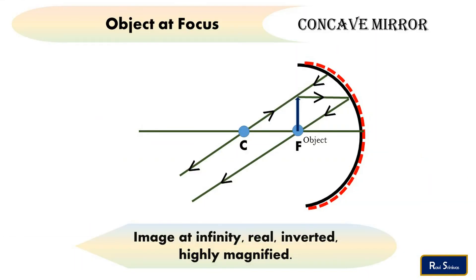In this case, the object is kept at the focus. The two light rays from the object after reflection will meet at a very large distance, so the image is at infinity. A real image which is inverted and highly magnified is formed here.